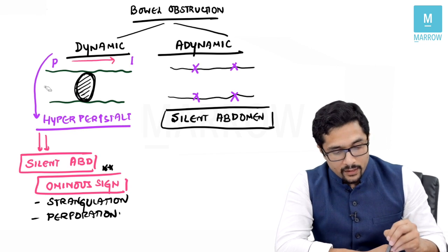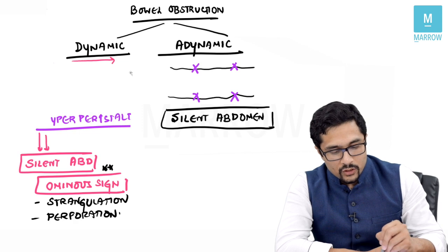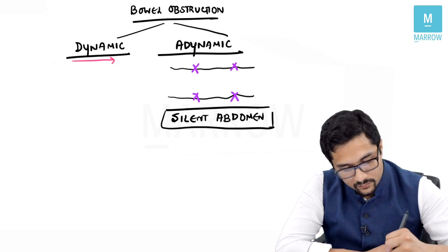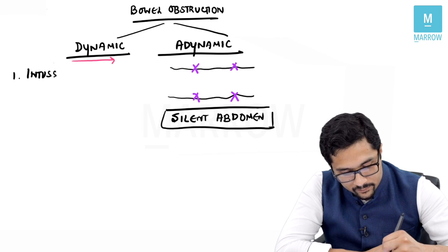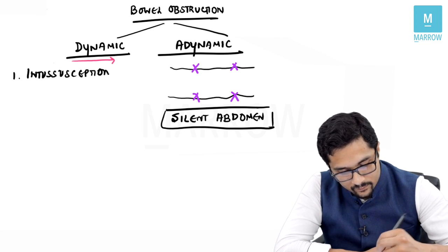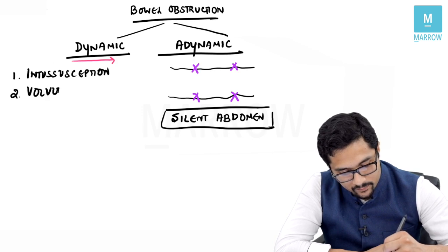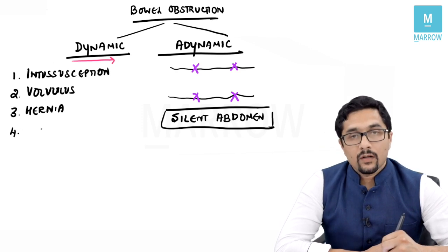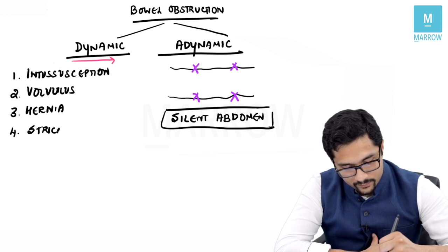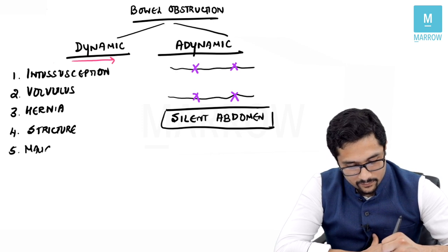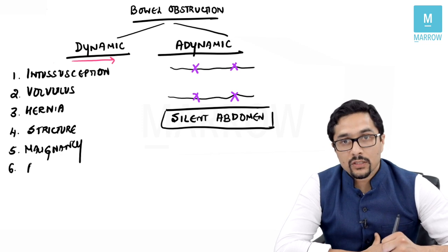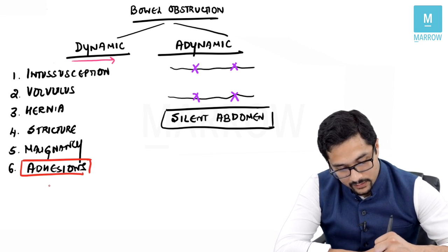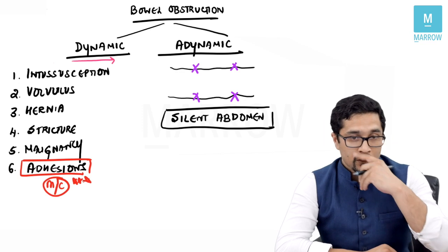What are the causes of dynamic and adynamic obstruction? The causes of dynamic obstruction are intussusception, volvulus, hernias, stricture, malignancy, and adhesions. Out of these, bowel adhesions are the most common cause of bowel obstruction overall.